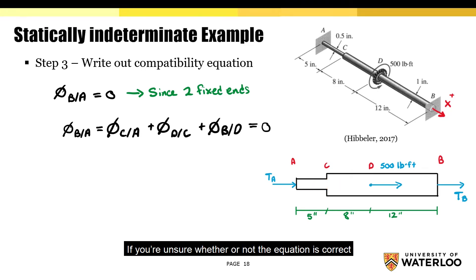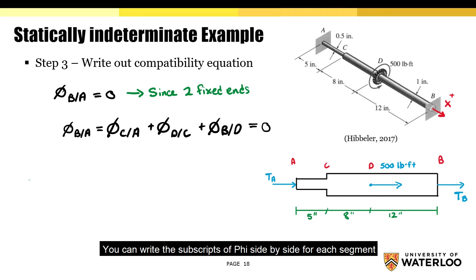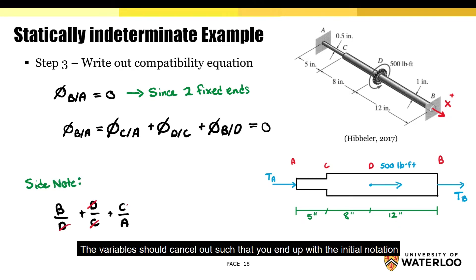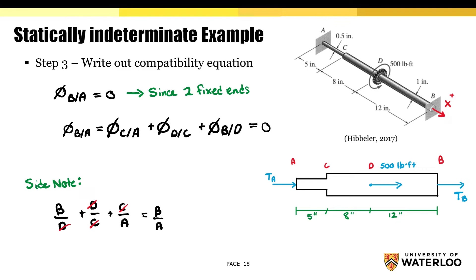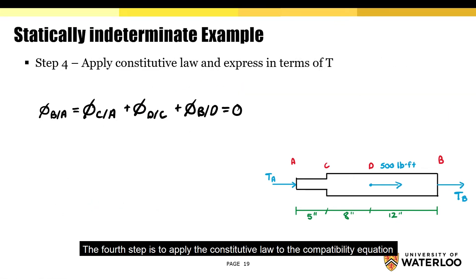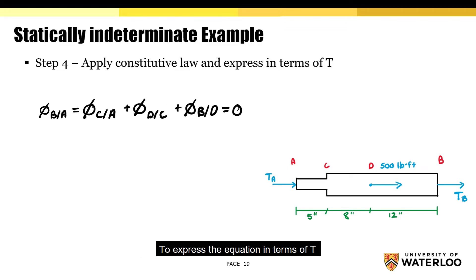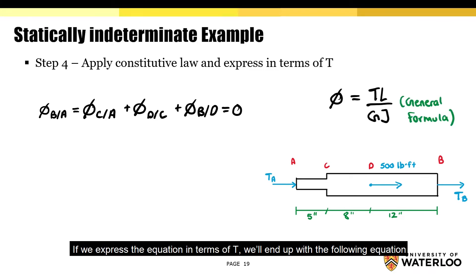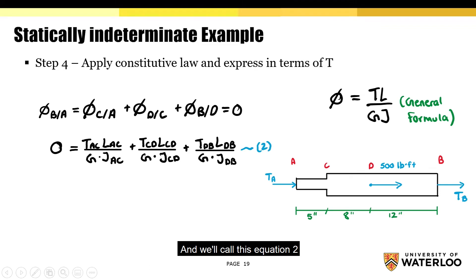If you're unsure whether or not the equation is correct, as mentioned in the lecture video, you can write the subscripts of phi side by side for each segment — the variables should cancel out such that you end up with the initial notation. The fourth step is to apply the constitutive law to the compatibility equation to express the equation in terms of T, using the angle of twist formula. We'll call this equation 2.